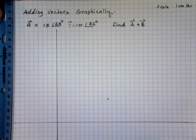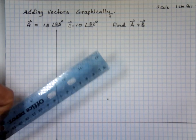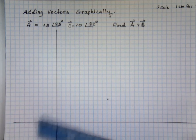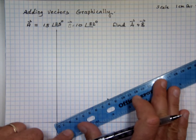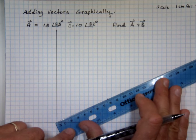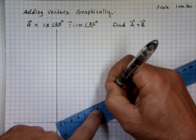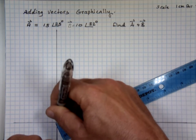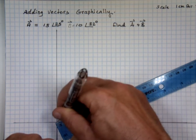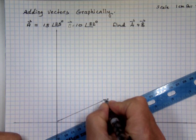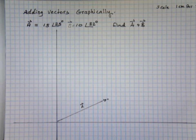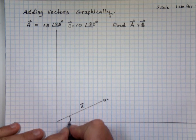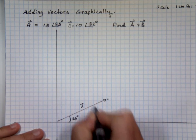So the 15 is going to be how long? Seven and a half. Let's make this vector 7 and a half centimeters long. That's vector A, which has a value of 15 at an angle of 25 degrees, and the length of it is 15 units long.